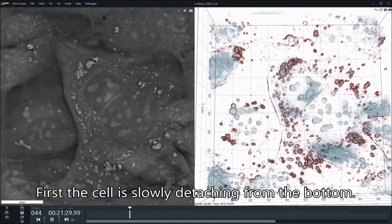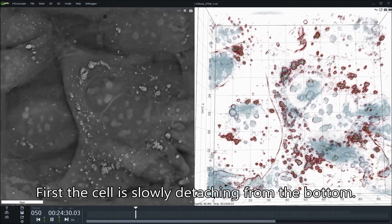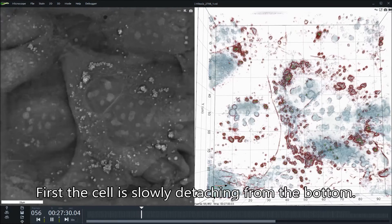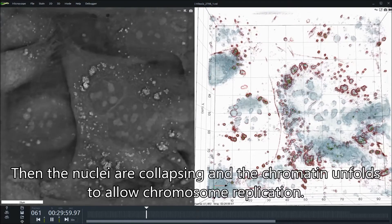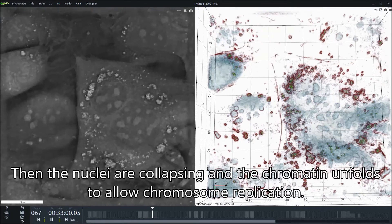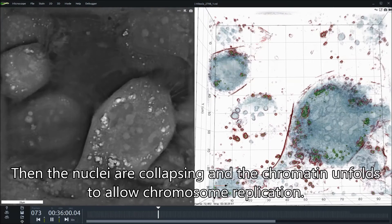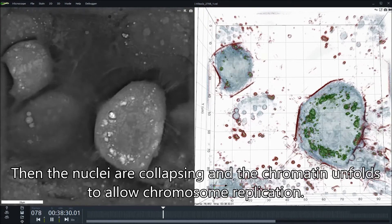First, the cell is slowly detaching from the bottom. Then, the nuclei are collapsing and the chromatin unfolds to allow chromosome replication.